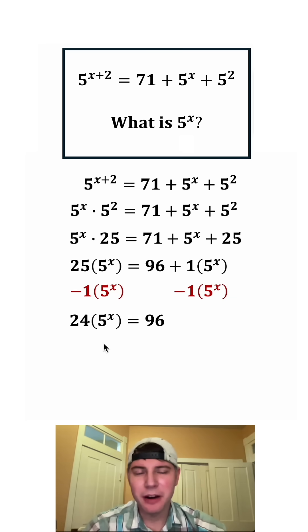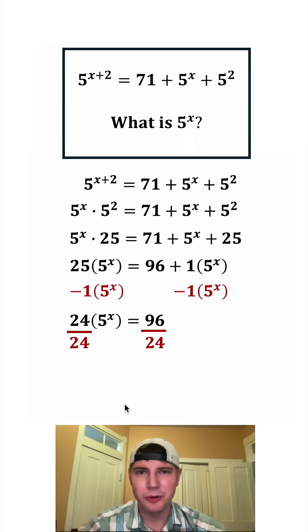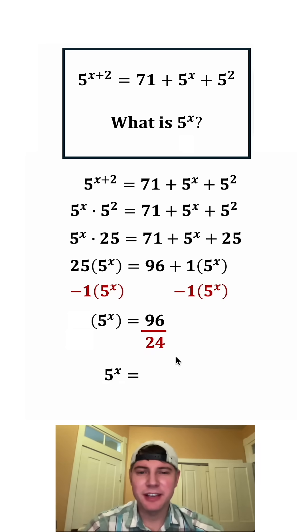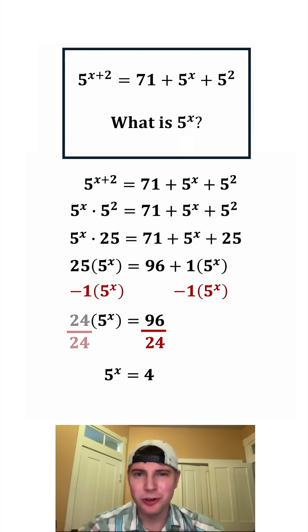Now to get this 5 to the power of x all by itself, we can divide both sides by 24. On the left-hand side, these cancel each other out, so we're left with 5 to the power of x. And on the right-hand side, 96 divided by 24 is 4. And this is the answer to our question — 5 to the power of x is equal to 4.